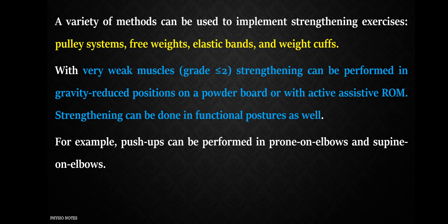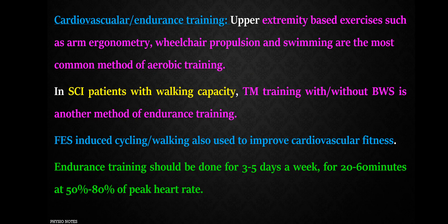If muscle grade is less than two, strengthening can be done using a re-educational board. For cardiovascular and endurance training, upper extremity-based exercises such as arm ergometer, wheelchair propulsion, and swimming are most common. For patients with walking capacity, treadmill training with or without body weight support can be used. Functional electrical stimulation-induced cycling or walking can also improve cardiovascular fitness. Endurance training should be performed three to five days per week for 20 to 60 minutes at 50 to 80 percent peak heart rate.